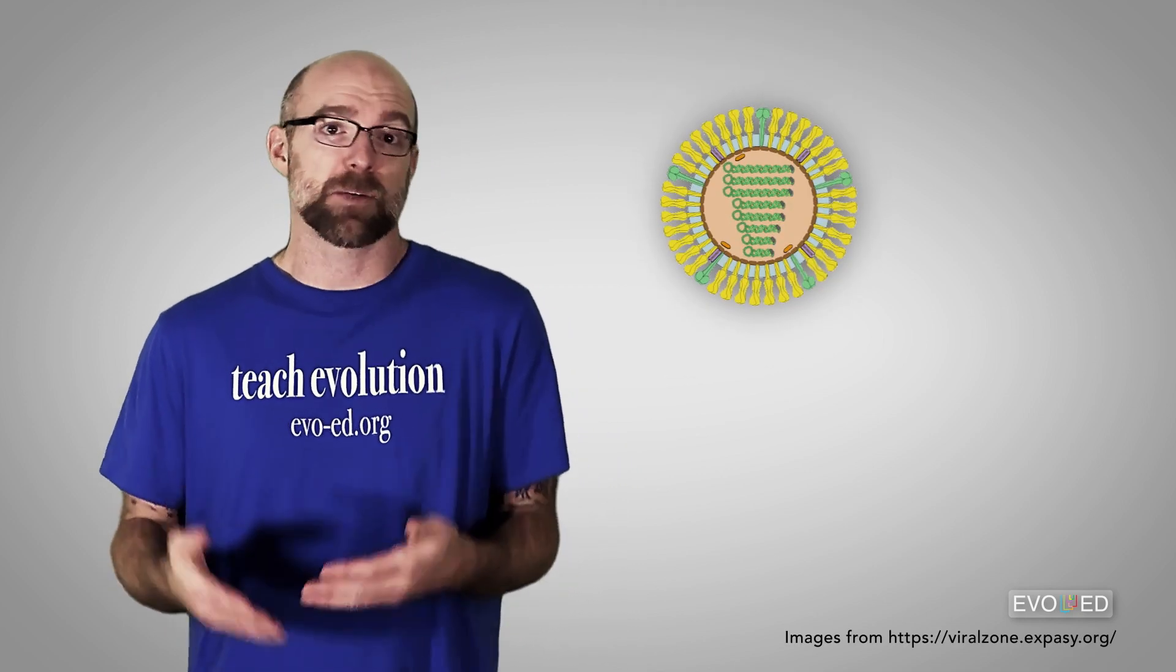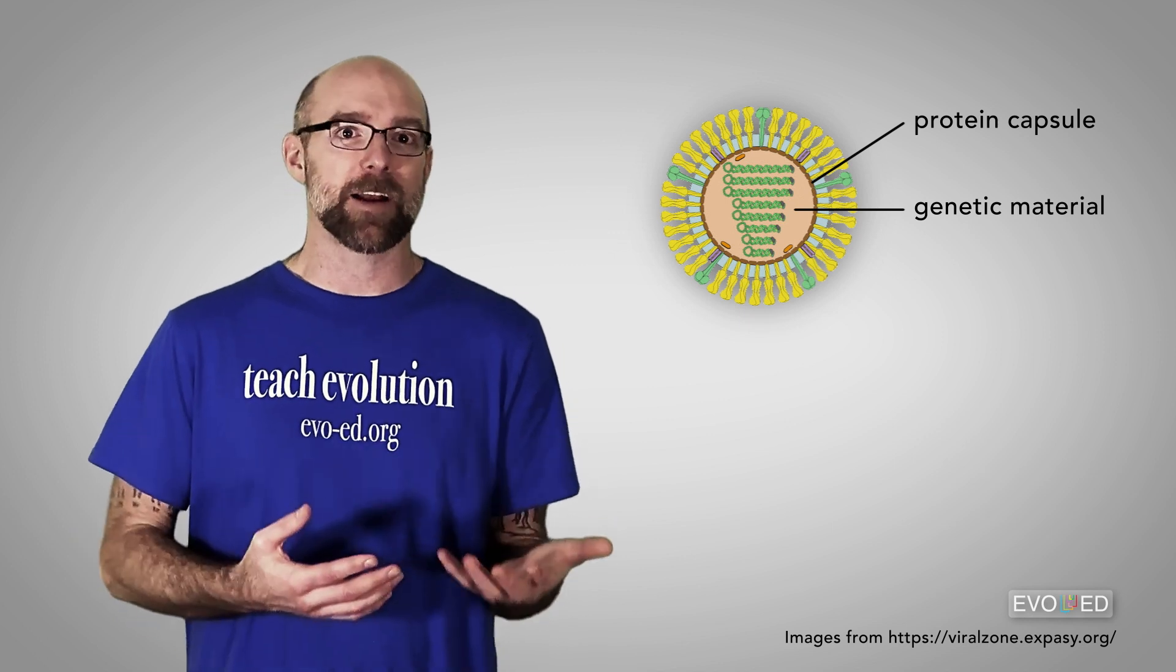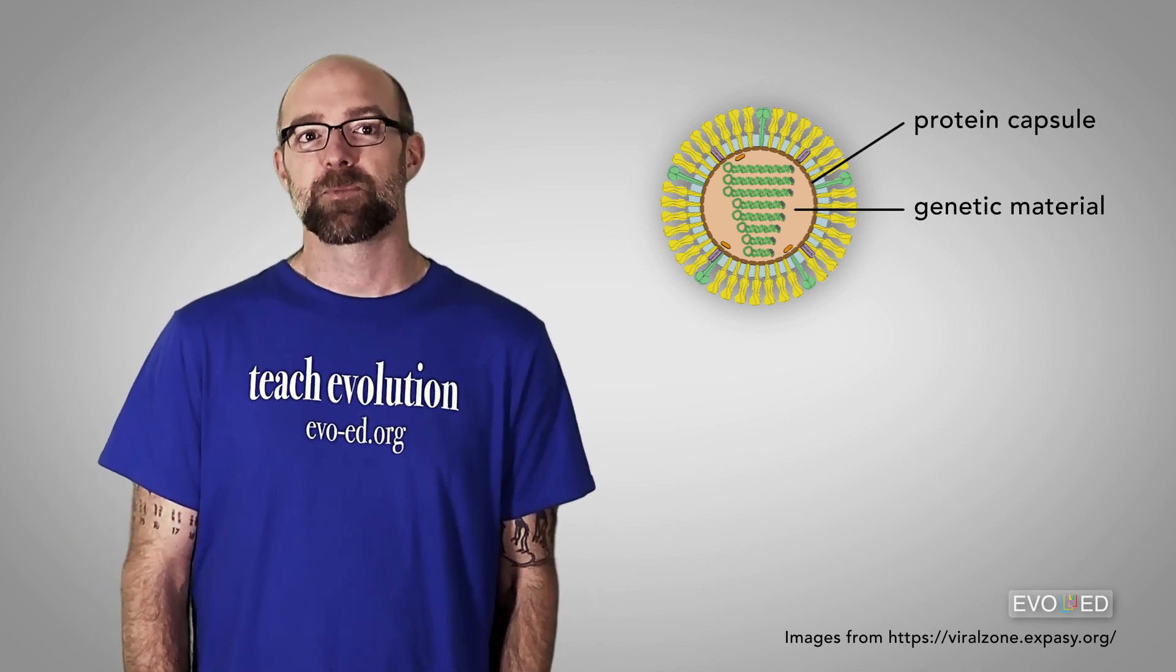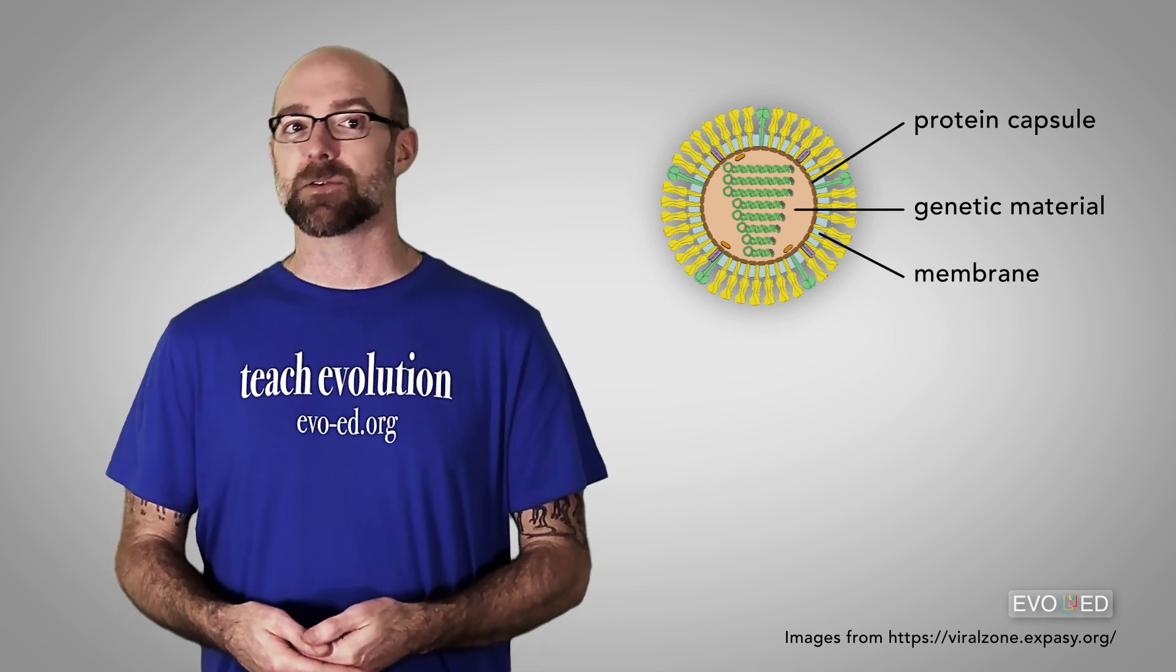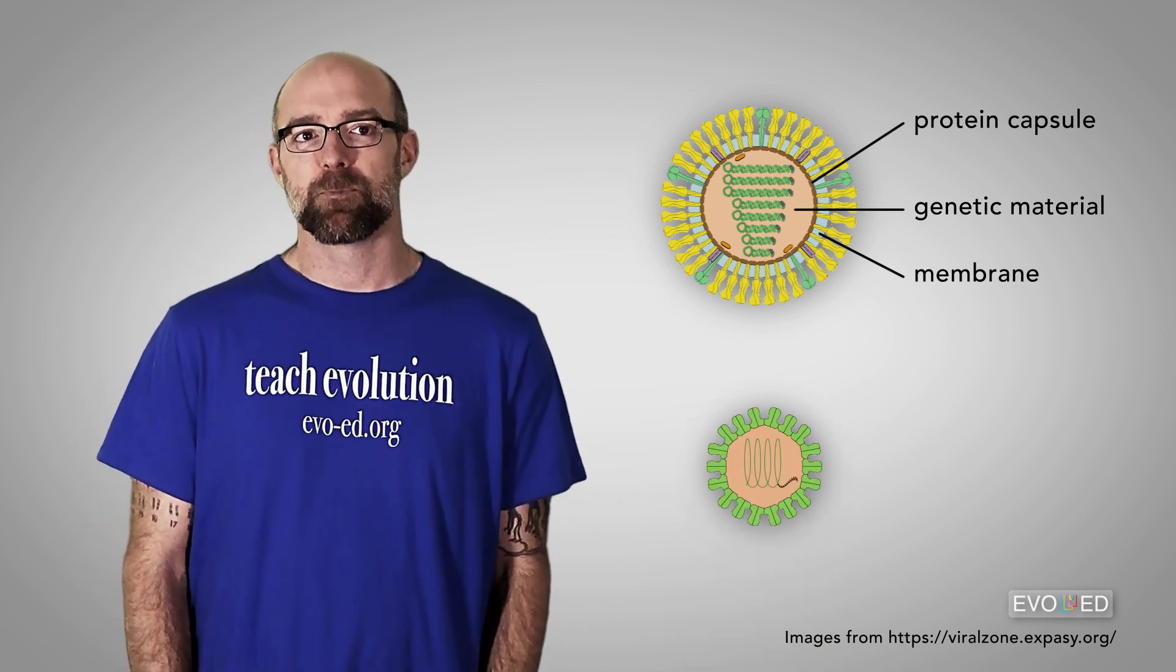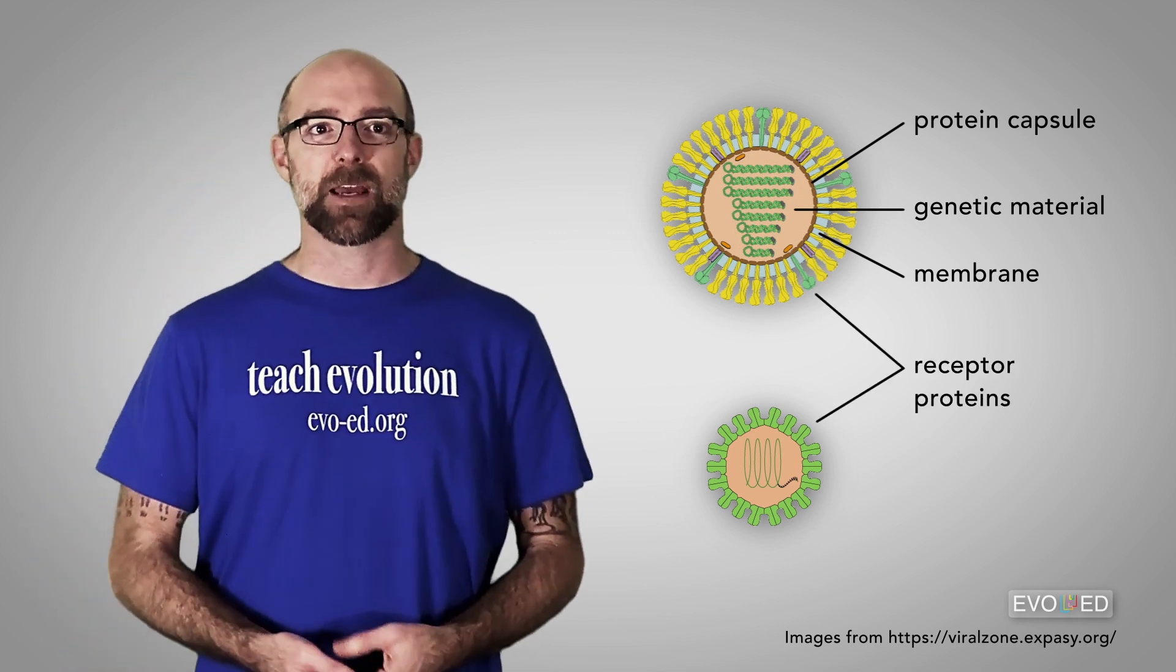But before I get there, I want to give you a quick reminder of what human viruses look like. There's a protein capsule that holds genetic material. Could be DNA, could be RNA. It just depends on the virus. Then for some viruses, there's a membrane around the protein capsule. And for others, there's no membrane. But they all have these receptor proteins around the outside.